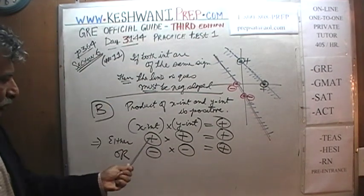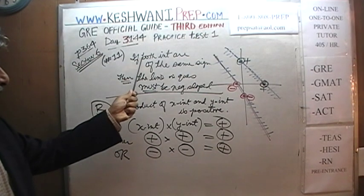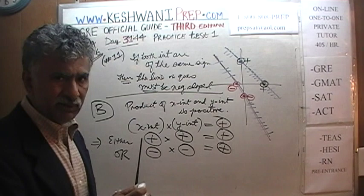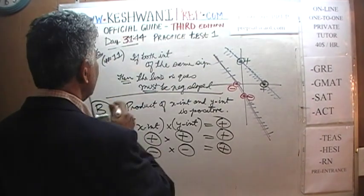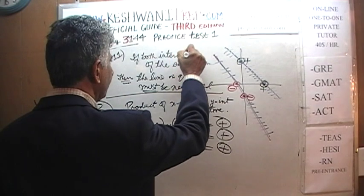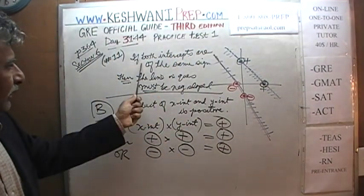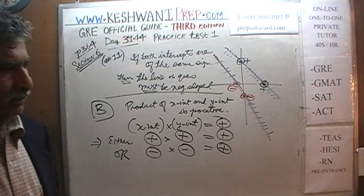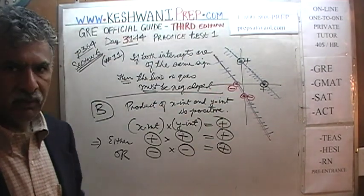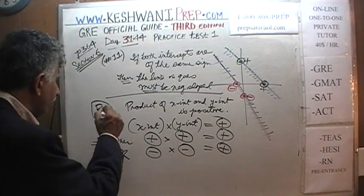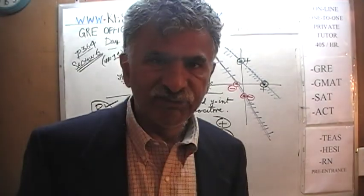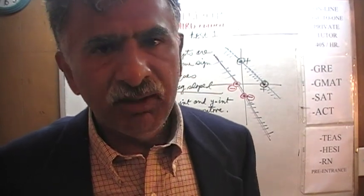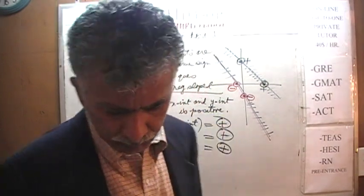If the product is positive, this implies that they cannot be of the opposite sign. If the X-intercept and Y-intercept have opposite signs, the product would not be positive. And if they are both of the same sign — that's the repetition. Statement B repeats what Statement A just told us in different words. They phrase it differently, but it's the exact same statement. Statement B is also sufficient.